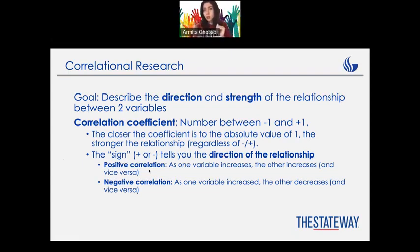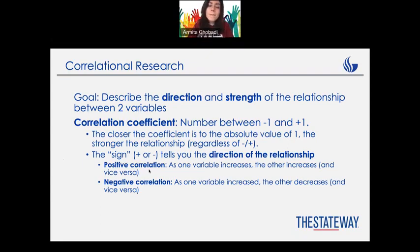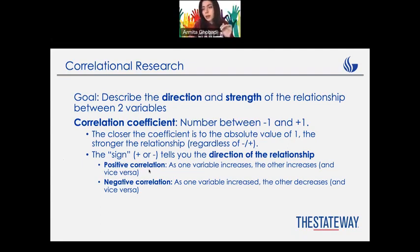A negative correlation means when one variable is increasing, the other one is decreasing, and vice versa. For example, minus 0.95 means whenever variable number one is increasing, variable number two is decreasing.